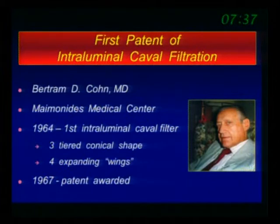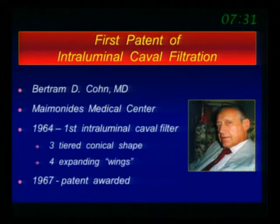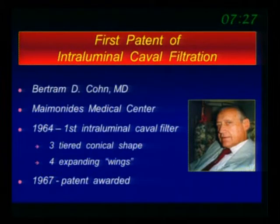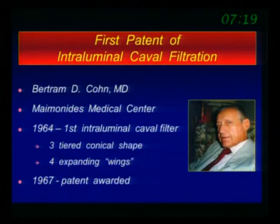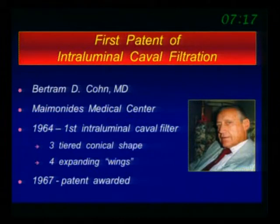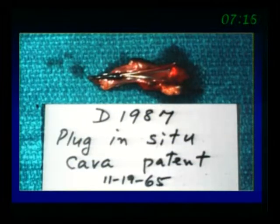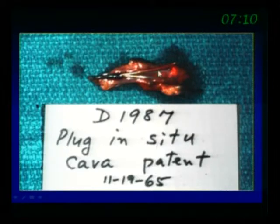The first patent on intraluminal cava filtration — and in fact, the first patent on any intravascular procedure — was done by a pediatric surgeon at my previous hospital, the Maimonides Medical Center. Dr. Cohen, in 1964, described the first vena cava filter, did experiments in a bunch of dogs, sent an abstract, and got a US patent in 1967. Here's the filter that he designed, showing it picking up clots in dogs.